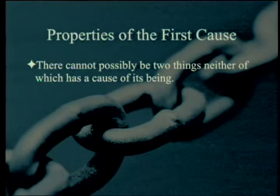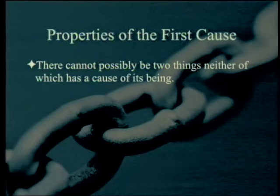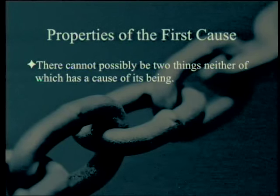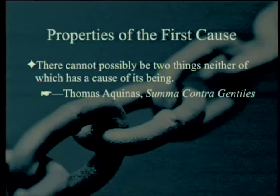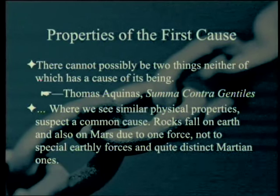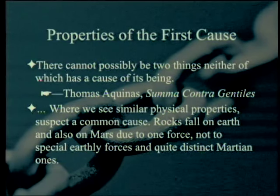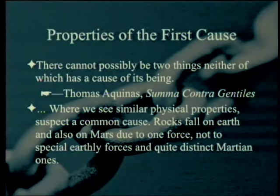Dr. Augros has established, at least to his own satisfaction, that there is at least one first cause. He says there cannot possibly be two things, neither of which has a cause of its being — that's a quote from Thomas Aquinas. Now he's going to give you a basis for believing that. Where we see similar physical properties, we suspect a common cause. Rocks fall on Earth and also on Mars due to one force — not special earthly forces and distinct Martian ones — usually known as gravity.